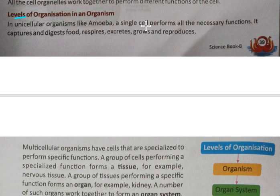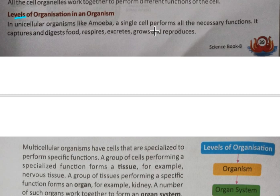Hello students, this is Class 8 Chapter 4: Levels of Organization in an Organism. We start by reading about unicellular organisms. In a unicellular organism like amoeba, a single cell performs all the necessary functions. Such an organism is called unicellular.